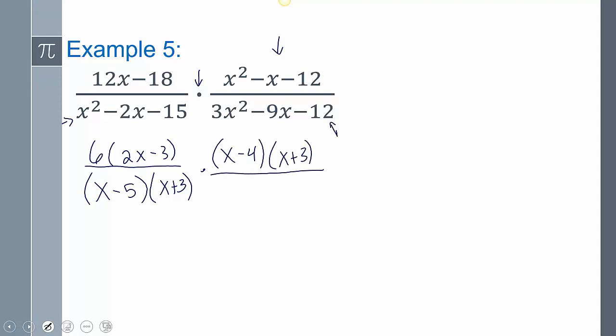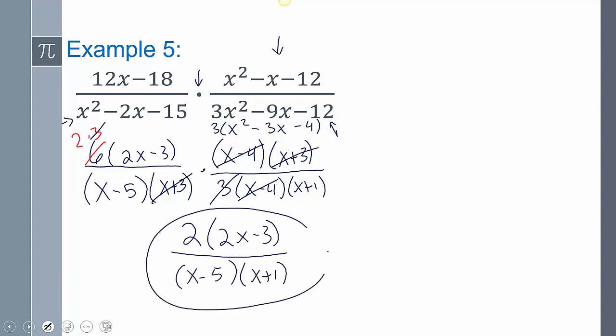And then it looks like down here at the bottom, there's a 3 that's in common. And so if I factor out that 3, that looks like x minus 4 and x plus 1. Just double checking real quick. So it seems like it is. Okay. So now, factors reduce. Here's a factor that reduces. Here's a factor that reduces. It looks like I can break 6 into 2 times 3. Because now, the 3s reduce. And so now I'm going to get 2 times 2x minus 3 over x minus 5 times x plus 1. And that's going to be my answer.